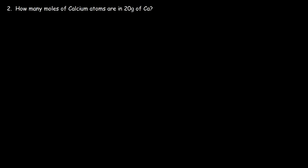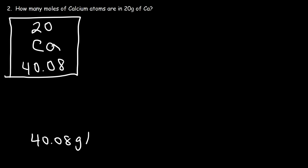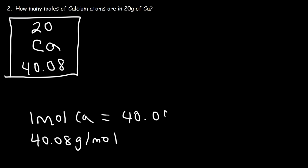Number two: how many moles of calcium atoms are in 20 grams of calcium? First, let's find the atomic mass of calcium. Looking at the periodic table, calcium has an atomic number of 20 and an average atomic mass of 40.08. That number is the molar mass of calcium — 40.08 grams per mole. So one mole of calcium has a mass of 40.08 grams.